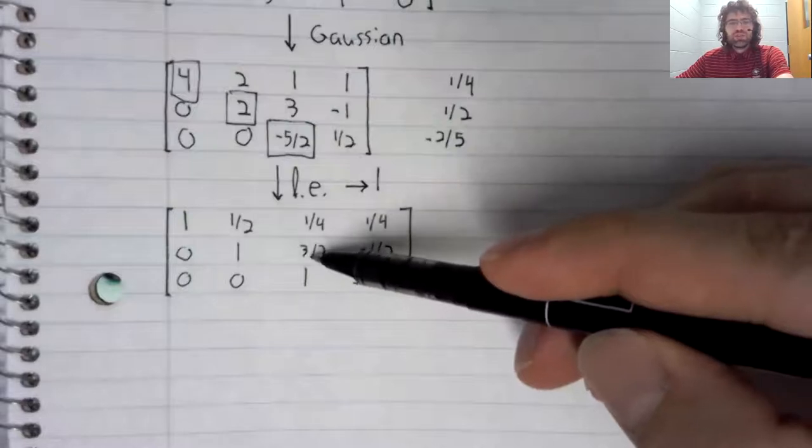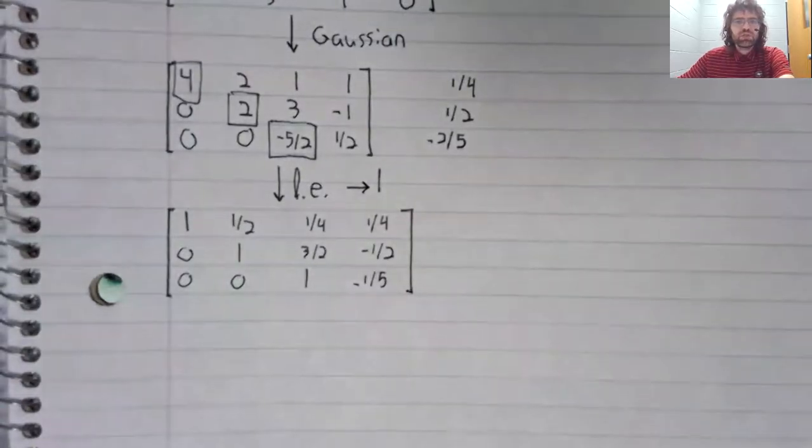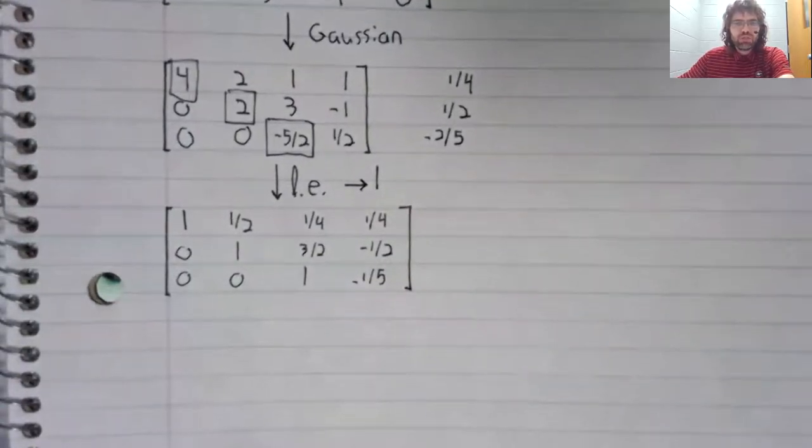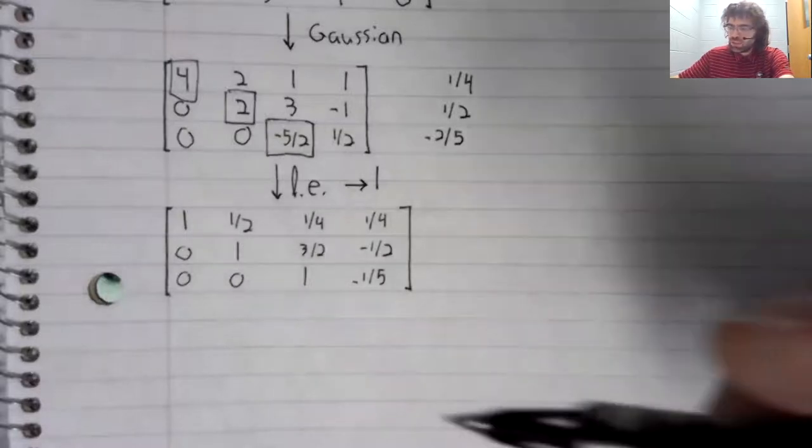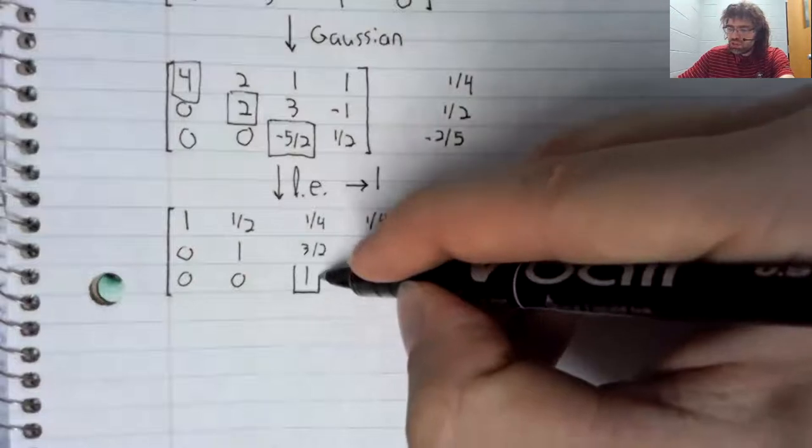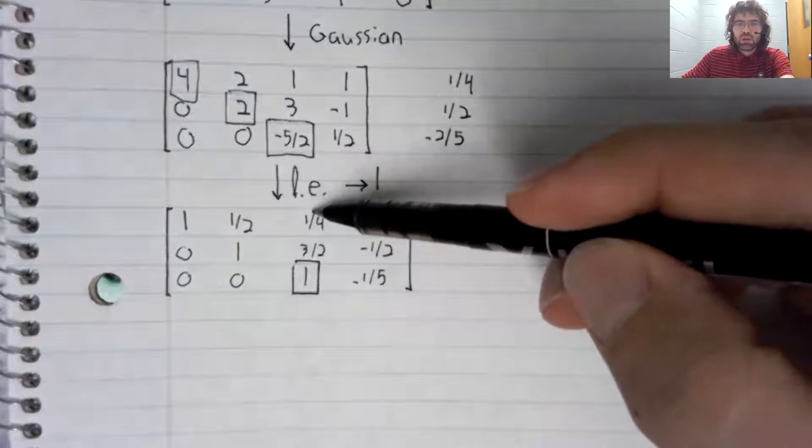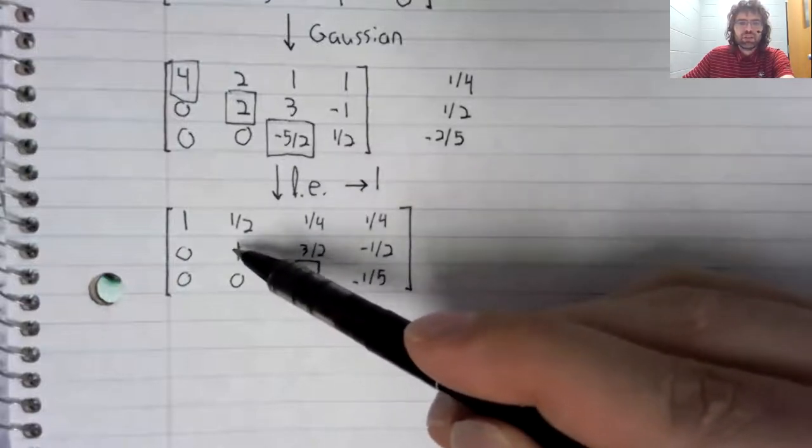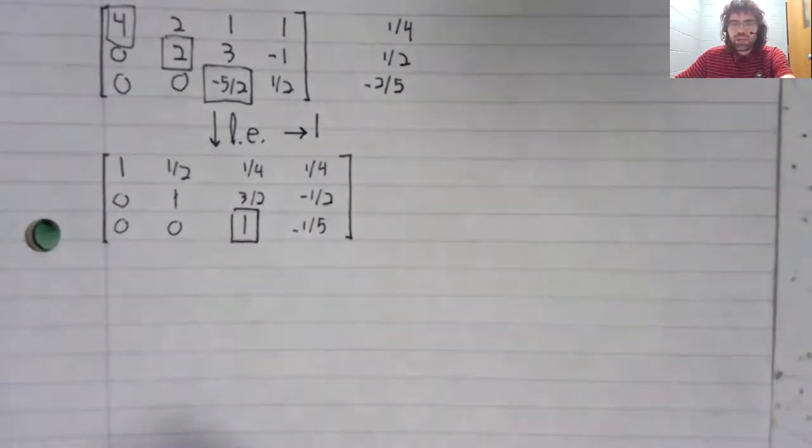And now we need this to be zero, this to be zero, and this to be zero. We're going to use the same method we used for Gaussian elimination, except instead of starting up here and working down and to the right, we're going to start down here, make this zero, make this zero. Then we're going to go up and to the left, use this one to make this zero.